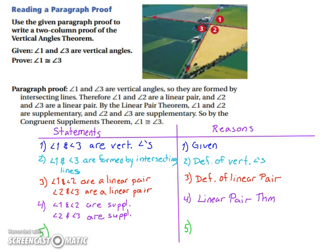So now we can look at angle one and angle two are a linear pair, and angle two and angle three are a linear pair based on the definition of a linear pair. And then we can move on to looking at angle one and angle two are supplementary and angle two and angle three are supplementary because of the linear pair theorem. Finally, we can wrap it up with step five, and that would be our last piece: angle one is congruent to angle three and we used the congruent supplements theorem.